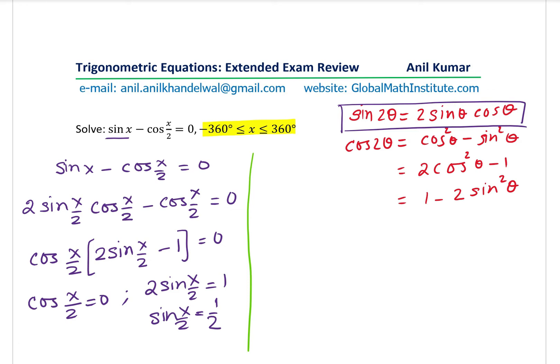When we are working with x by 2, we know that x is given to us as between minus 360 degrees and 360 degrees, right? But x by 2 is going to be half of it. So that is minus 180 degrees to 180 degrees. We have to provide the x by 2 values within that so that the x is within the required domain of minus 360 to 360 degrees.